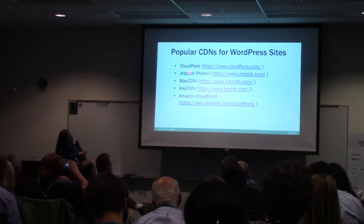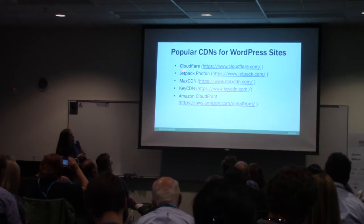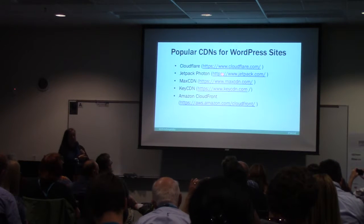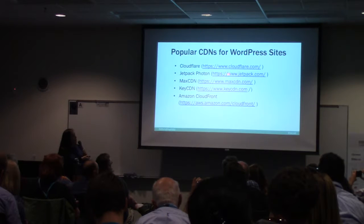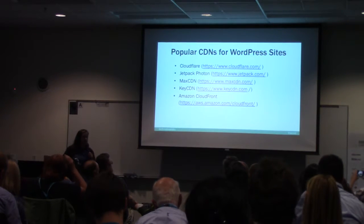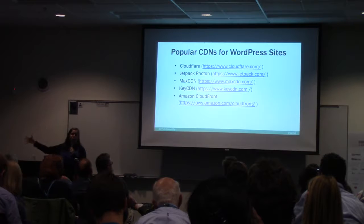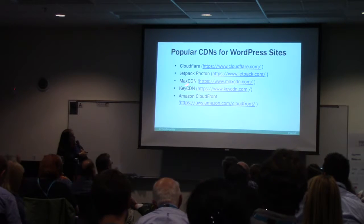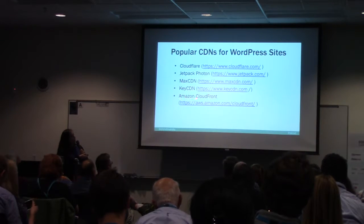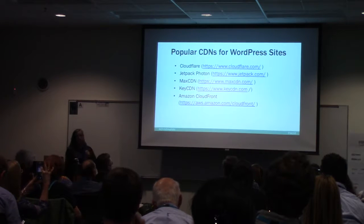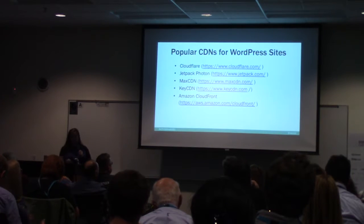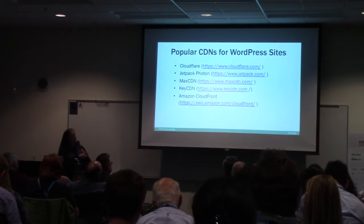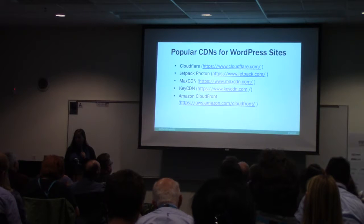Here are some resources for a CDN: Cloudflare — they have a free and paid version. I've used Cloudflare and Jetpack Photon. If you use the Jetpack plug-in and have Photon enabled, Jetpack stores all your images on their server so it loads them faster. Max CDN, KeyCDN, Amazon CloudFront — this is more for developers, I've heard. I haven't used these, but my research shows these are good ones. When I turned Cloudflare on, my site definitely went faster.